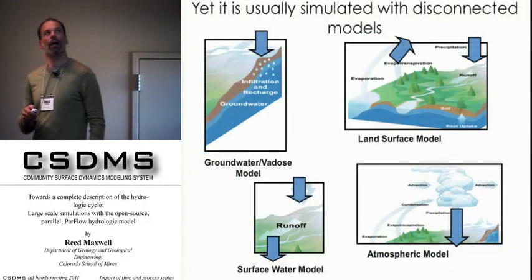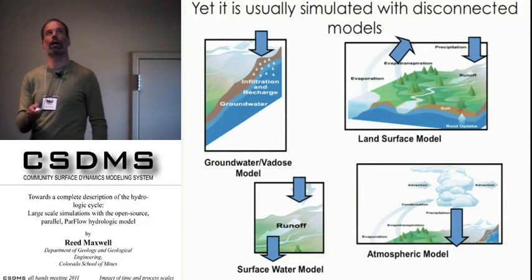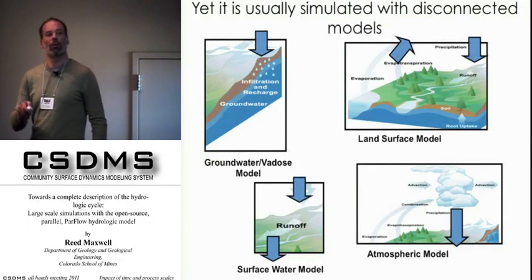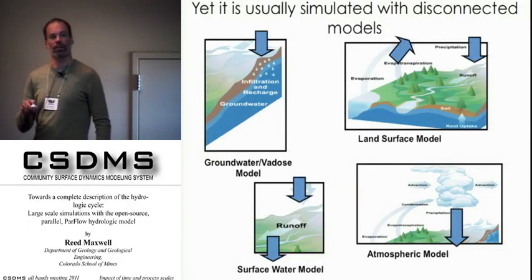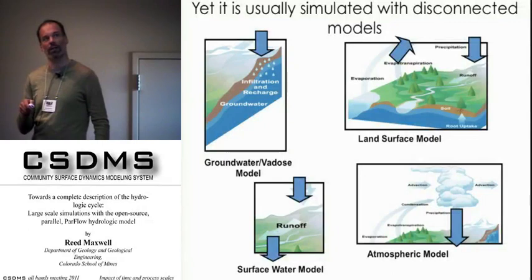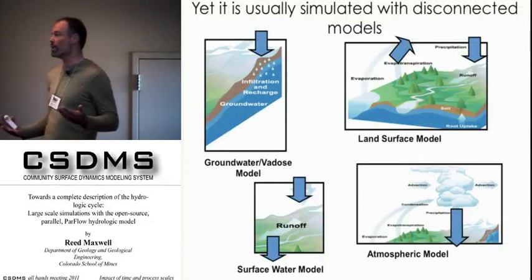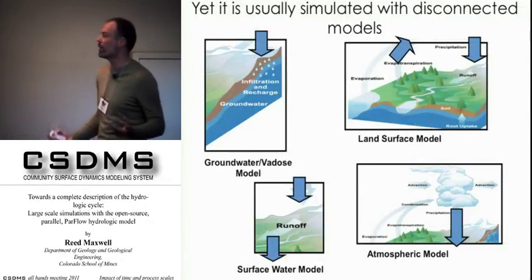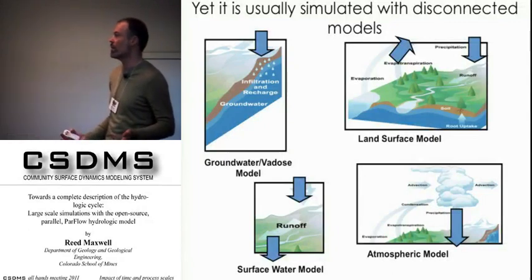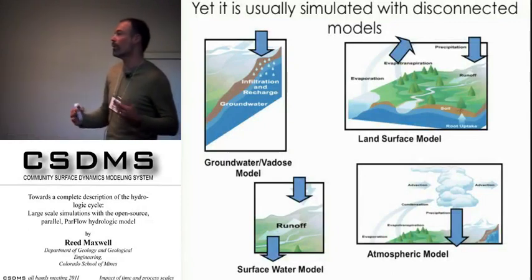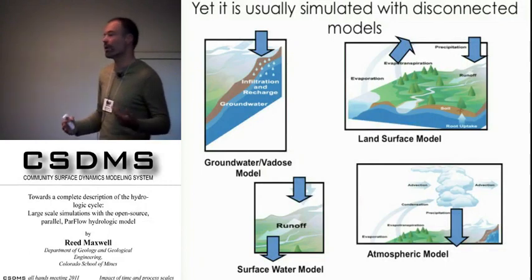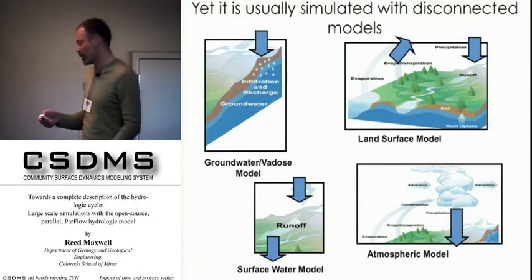We have, for example, the groundwater vadose zone model or land surface models, surface water modeling, and fluxes that are abstracted. These things break down by disciplinary boundaries, often by timescales — a lot of the same things that we've talked about.